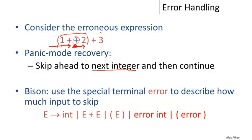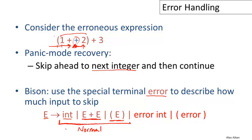In tools such as Bison, a widely used parser generator, there's a special terminal symbol called 'error' to describe how much input to skip. The productions given in Bison look like this: E could be an integer, the sum of two E's, or a parenthesized expression — those are the normal productions. If none of those work, you can try productions that have 'error' in them. The 'error' symbol is special in Bison and specifies alternatives to try when the normal productions fail. Let's focus on one: if you find an error while trying to parse an E, we haven't said exactly how that works yet — we'll see that in future videos.